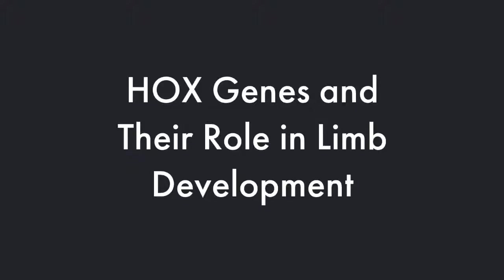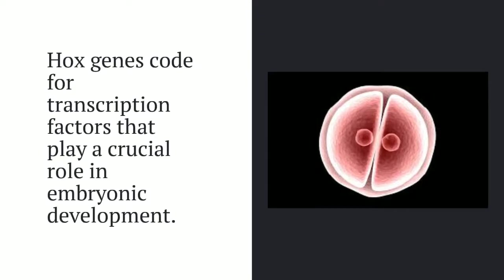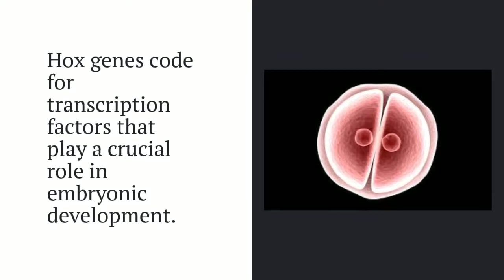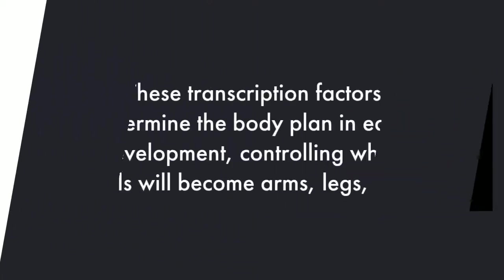Hox genes and their role in limb development. In broad terms, the job of the Hox genes is to code for transcription factors that play crucial roles in embryonic development. So when an organism is just starting off as an embryo, in order for it to develop into a fully grown organism, these genes kind of direct the differentiation of all the different kinds of cells inside the organism.